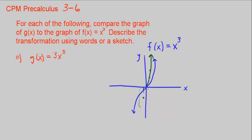So it's going to be, as you can see, a lot more narrower. In green here, we have g of x is equal to 3x cubed. So what transformation took place? Well, we know this is a vertical stretch by a factor of 3.